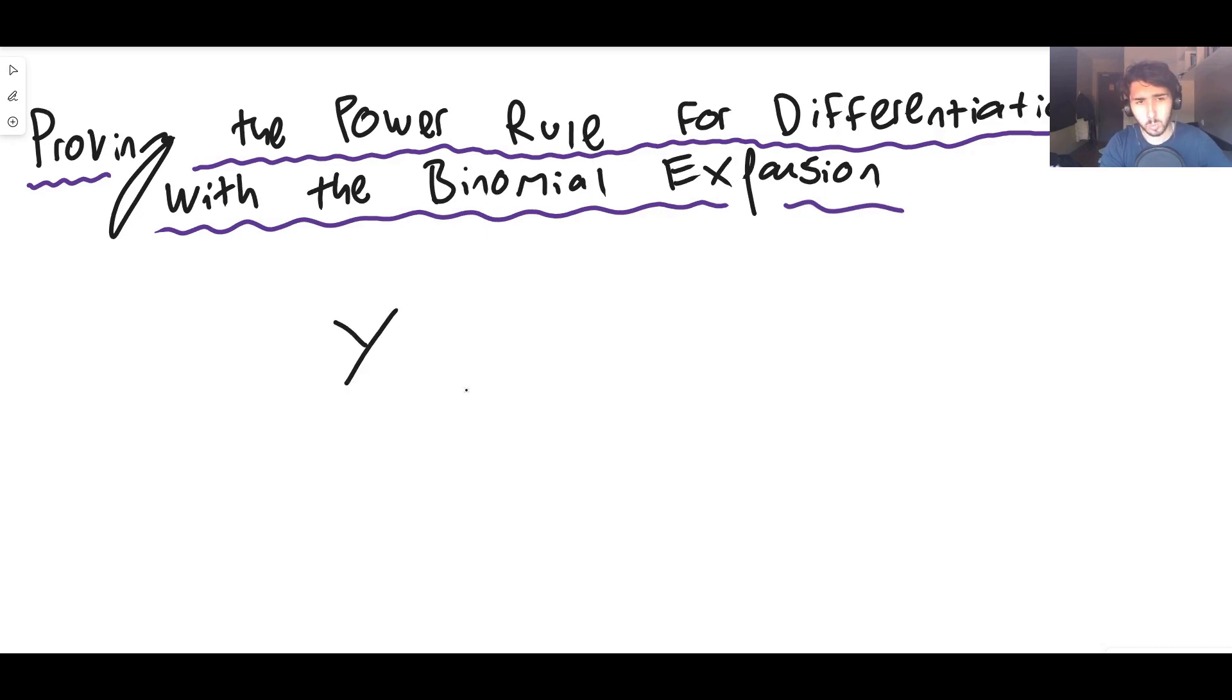So just to clarify, when I say we're going to prove the power rule, what I mean is if we have some y equals x to the n, we already know that the derivative of x to the n, or the derivative of y with respect to x, is just n multiplied by x to the n minus 1.